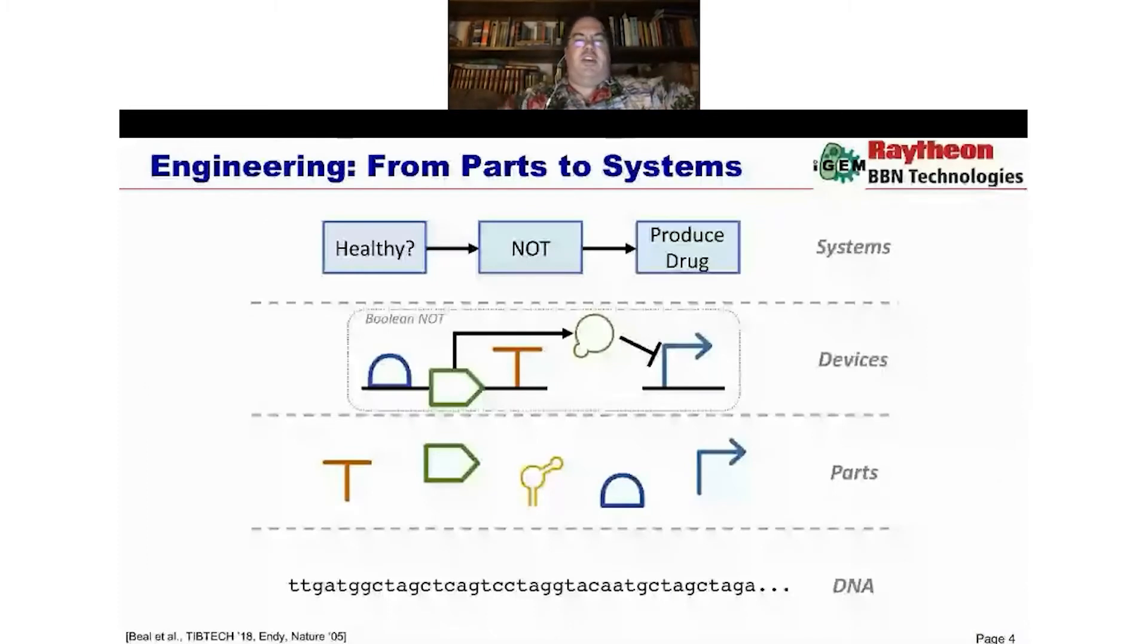So in order to actually engineer this, I want to revisit one of the very old diagrams of synthetic biology. This is from an early paper that Drew Endy put out and a number of people have redrawn this and revisited this over the years, including myself. We can think about parts. This is where a lot of iGEM lives, in terminators, coding sequences, aptamers, promoters, etc.